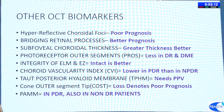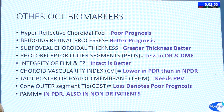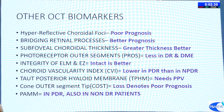Other OCT biomarkers include: hyperreflective choroidal foci (related to poor prognosis), bridging retinal processes (denote better prognosis), subfoveal choroidal thickness (greater thickness is better), photoreceptor outer segments (reduced in DR and DME), integrity of external limiting membrane and ellipsoid zone (intact zone is better), choroidal vascularity index (CVI), posterior hyaloid membrane (may need partial vitrectomy), and cone outer segment tips (COST) loss indicating poor prognosis. Paracentral acute middle maculopathy (PAM) can be seen in PDR and also in non-diabetic retinopathy patients.